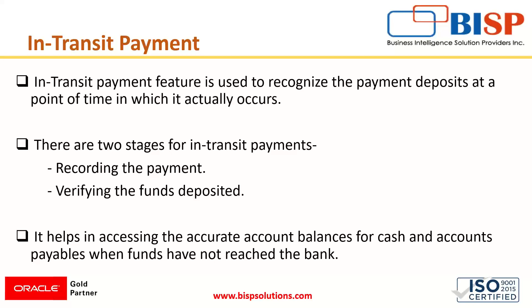After verification is received that the payment has been properly processed by the vendor's bank, it is marked as confirmed and the amount from the CIT account is taken out and the reconciliation process begins. The in-transit payment feature helps in assessing accurate account balances for cash and accounts payable when funds have not yet reached the bank, accurately tracking the status of payments related to vendors.